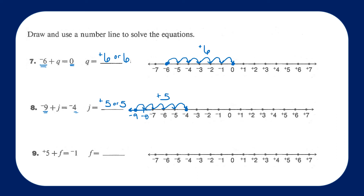Question number 9: we're starting at the integer positive 5 and we want to land on negative 1. I'm going to have to decrease my number by 1, 2, 3, 4, 5, 6 units — that's moving negatively 6 spaces. So I will have added negative 6. Positive 5 plus negative 6 will give me negative 1.